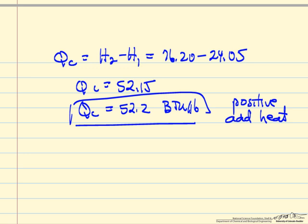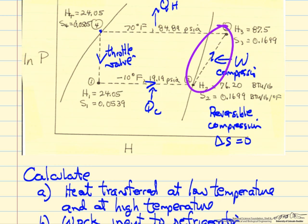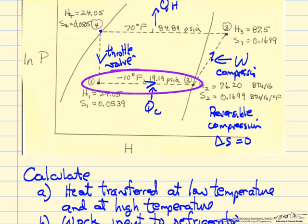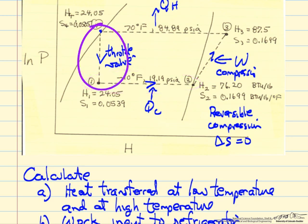The next calculation is work. Work is only in the compressor stage. The compressor does work on the fluid. This stage is only heat transfer, no work. This is heat transfer, no work. Here there is no work and no heat transfer. It is adiabatic irreversible expansion at constant enthalpy.